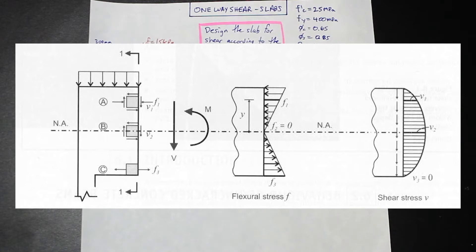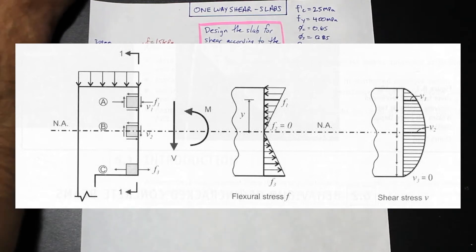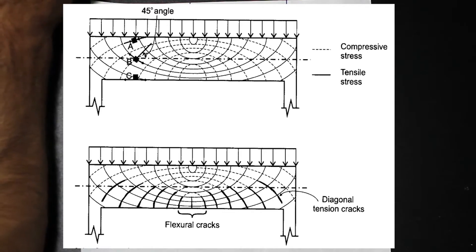The general behavior of concrete members subjected to a load shows the distribution of flexural and shear stresses. Tensile stresses occur, and these tensile stresses actually cause incline cracks, often called diagonal tension cracks. If we take a look at the screen, we can see stress trajectories in a homogeneous concrete beam.